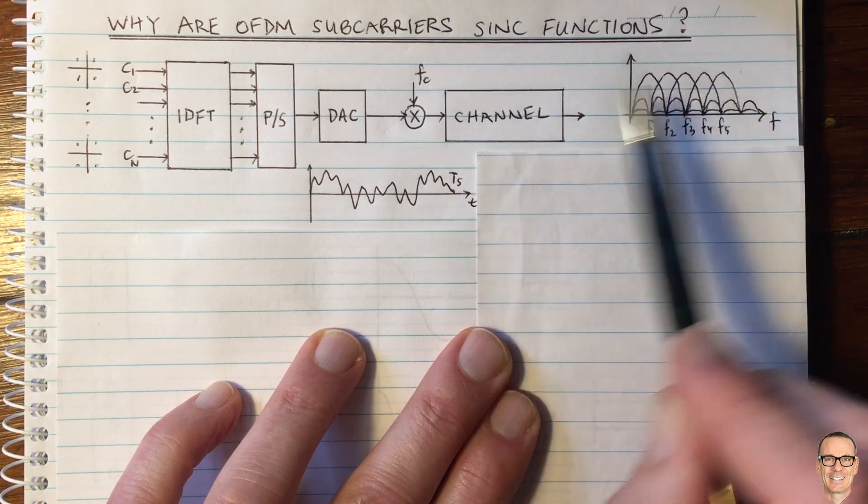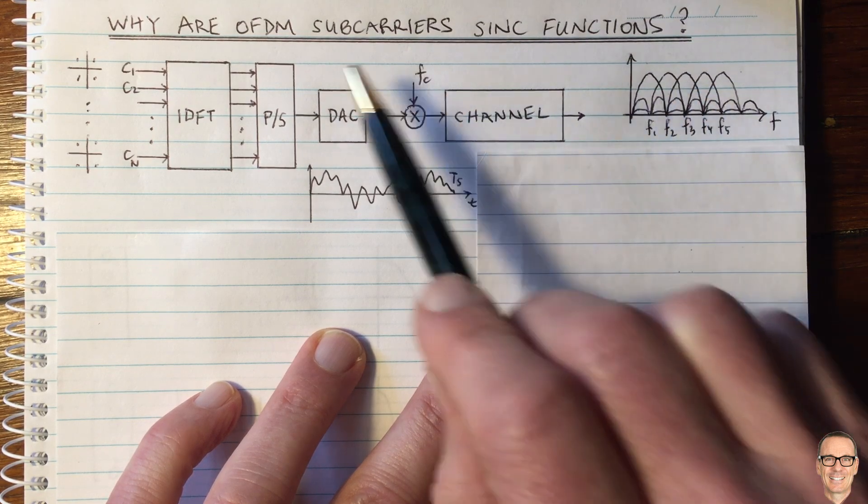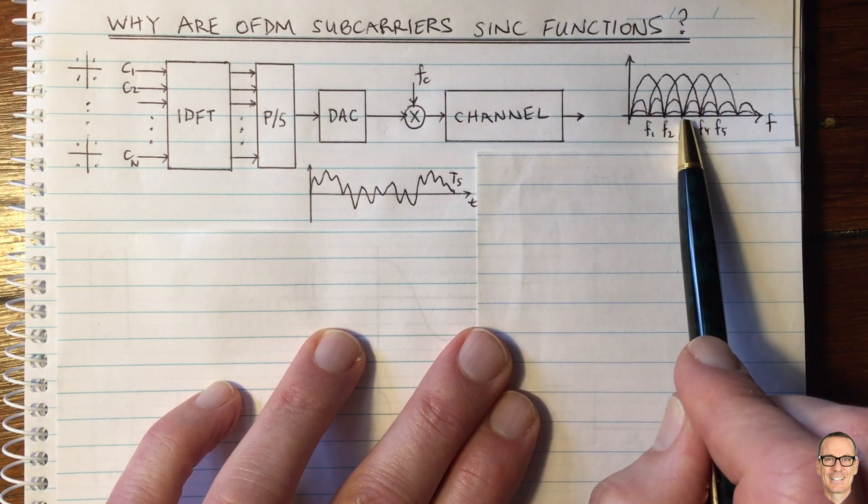So how do these two functions here relate to each other? How do we understand them in terms of the subcarriers, and to really understand why they are sinc functions?